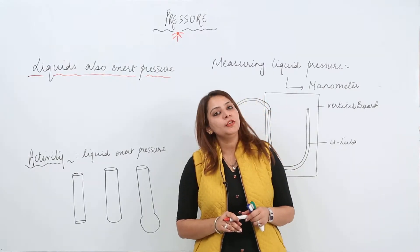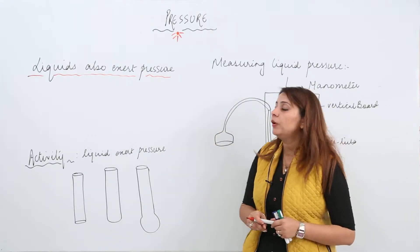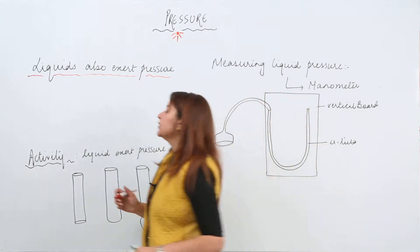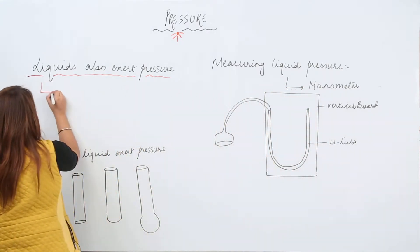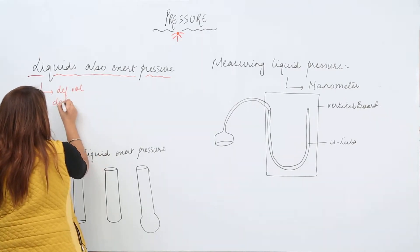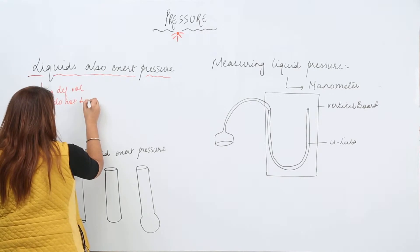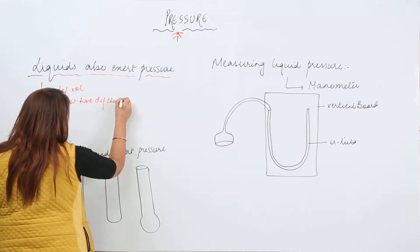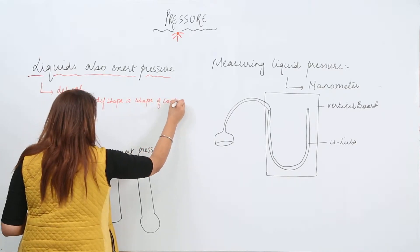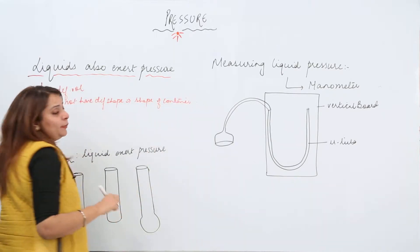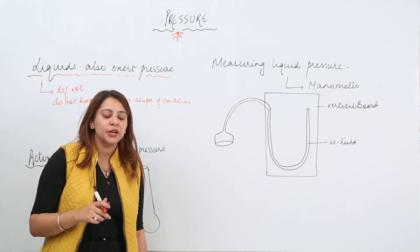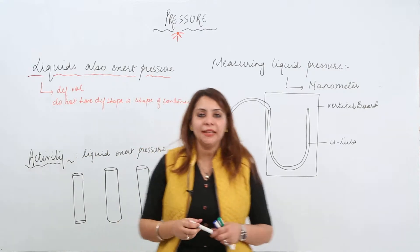As you know about pressure, we'll see that liquids also exert pressure. If you compare solids and liquids, we know that liquids have definite volume but they do not have definite shape. They actually take the shape of the container. So when we pour liquid into a container, we'll see that they will also exert pressure.